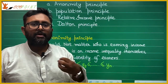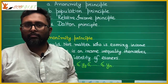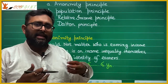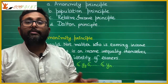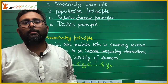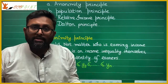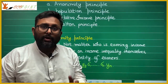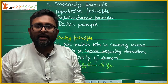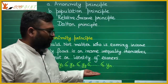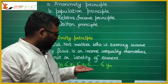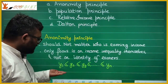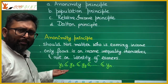For example, if I am earning 100 and you are earning 200, and we shuffle — so now I am earning 200 and you are earning 100 — income inequality should remain the same. It should not change. The focus is not on who is earning what; the focus is on what the income level is and how it is distributed. If you arrange income levels of individuals from lowest to highest, you have arranged people from poorest to richest.